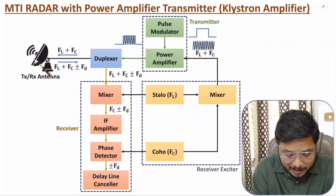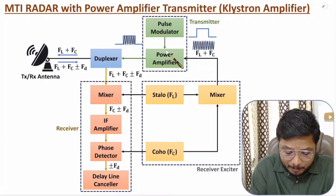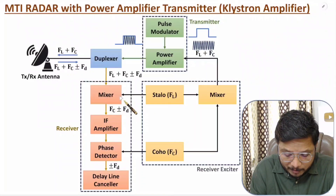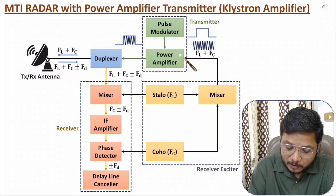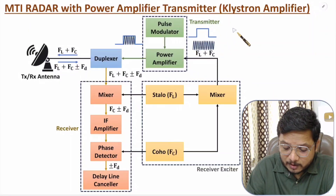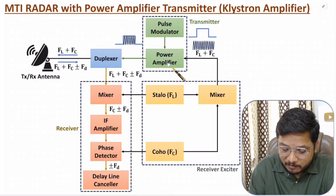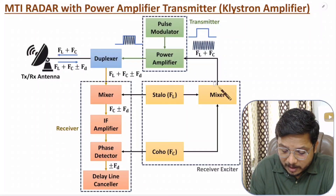The duplexer transfers the high power signal from the transmitter to the antenna, and whatever echo is received by the antenna is forwarded to the receiver circuit. In the transmitter, we have a power amplifier — specifically a klystron amplifier — which amplifies the input signal.